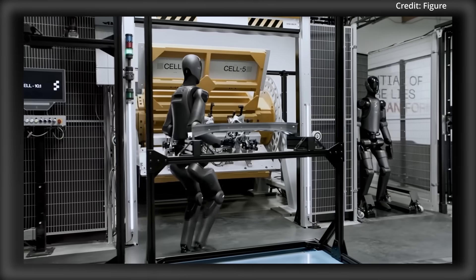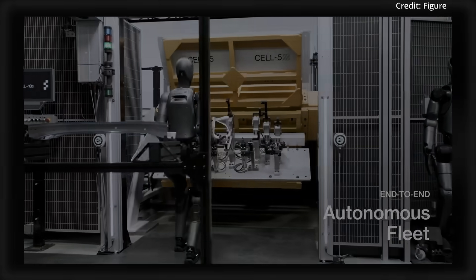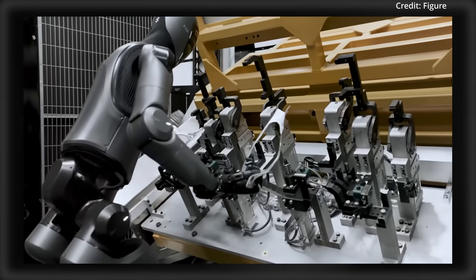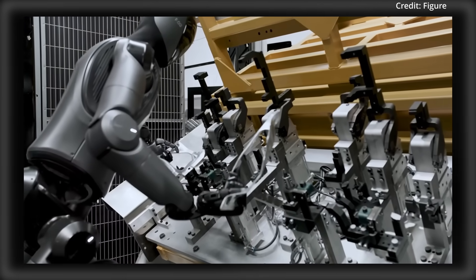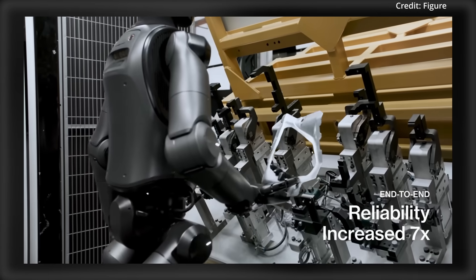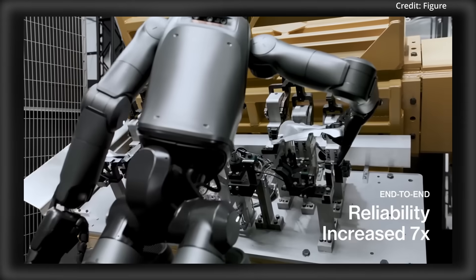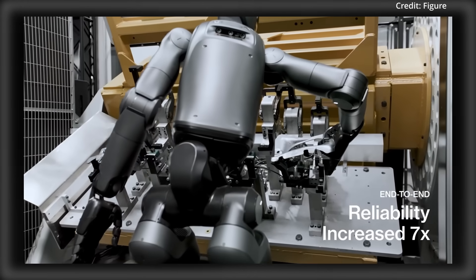Right now we're building one a week, and then we'll start building one a day and then multiples a day here in the next 12 months. It seems like a pretty straightforward path. I mean, we make cell phones almost by hand in the world, a few billion a year. This is more complex than a cell phone but far less complex than a car.